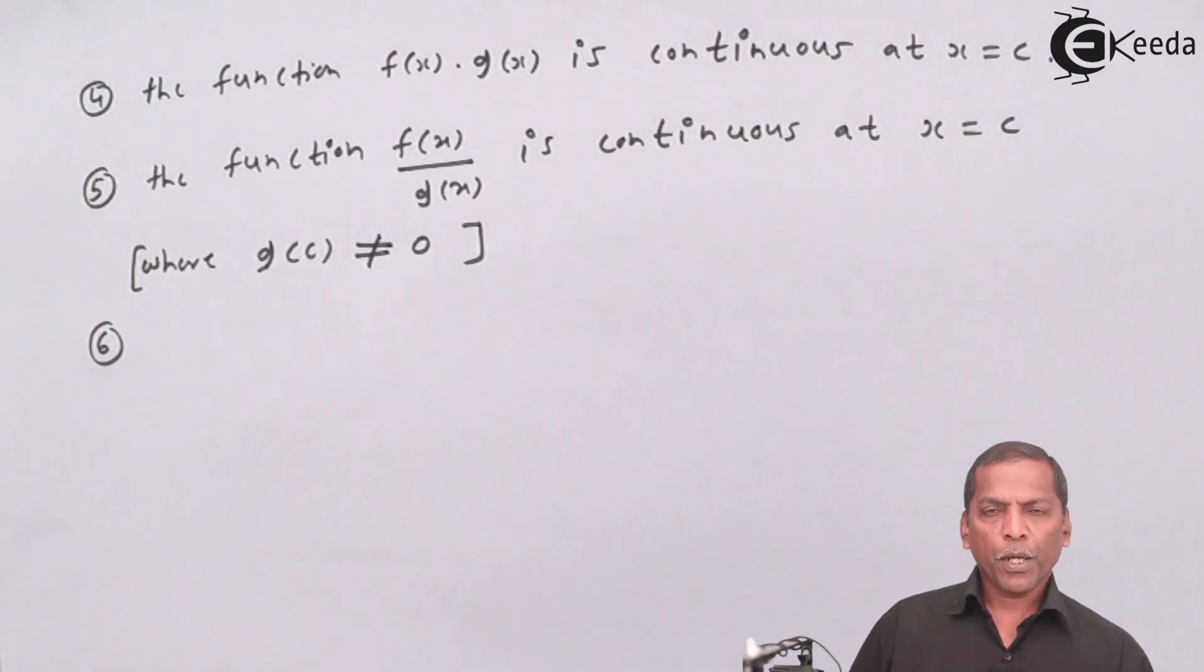Number six, the composite function that is f o g(x) and g o f(x) is continuous at x equal to c.